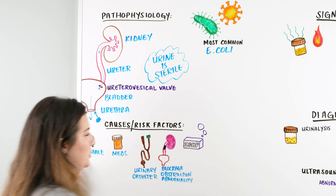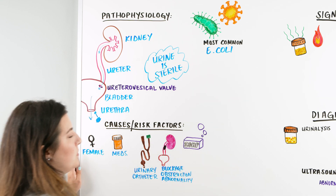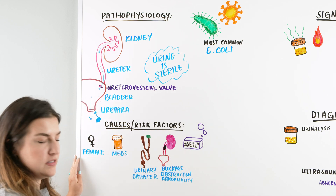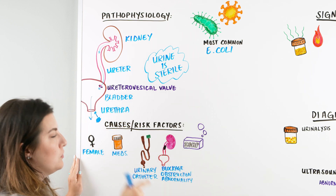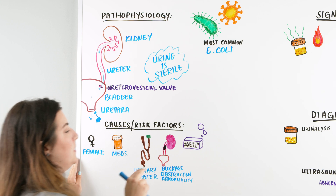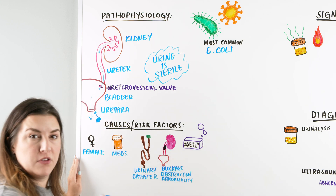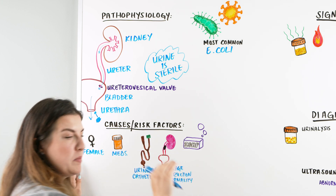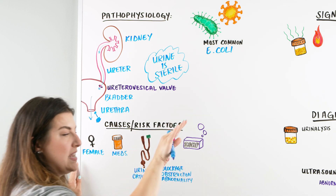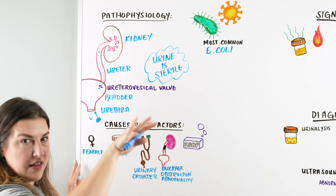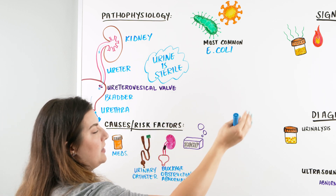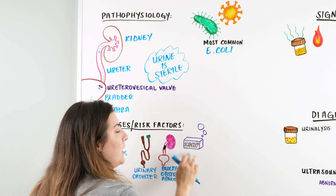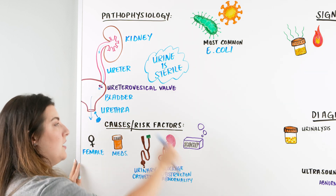The last risk factor is hygiene. Using perfumes or soaps in that area, not cleaning as often as we should, and for women especially, wiping back to front — which pulls bacteria from around the rectum closer to the urethra — can cause a UTI. Any type of hygiene issue could be contributing.